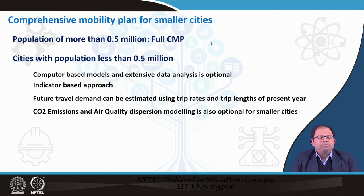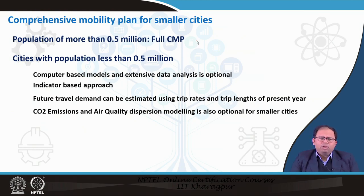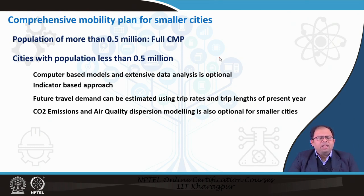For large cities with a population of more than 0.5 million, a full CMP is required. For cities less than 0.5 million, they neither have the financial resources nor require a full CMP, since smaller cities typically lack public transit networks with most people using bicycles or walking. For smaller cities, an indicator-based approach is followed — future travel demand is determined based on total trips generated from each zone and total trip length using standard projections. CO2 emission and air quality modeling is also optional for smaller cities.